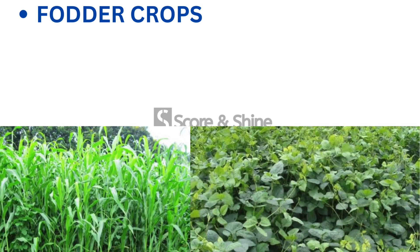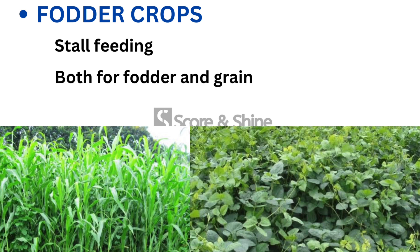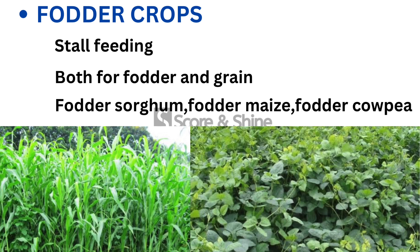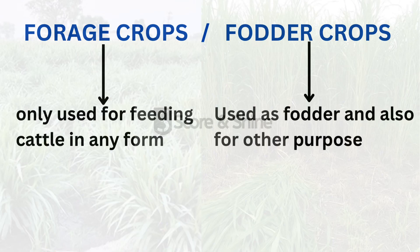Fodder crops are harvested and used for stall feeding. Fodder crops are grown and used for both fodder as well as for grain purpose. Examples of fodder crops are fodder sorghum, fodder maize, fodder cowpea, etc. The main difference between forage crops and fodder crops is that forage crops are only used for feeding cattle in any form, whereas fodder crops can also be used as fodder and for other purposes like producing grains.